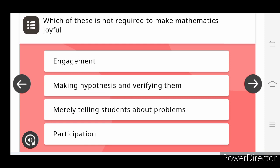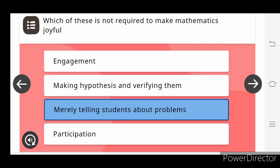Which of these is not required to make mathematics joyful? The options are engagement, making hypothesis and verifying them, merely telling students about the problems, participation. The answer is merely telling students about the problems.